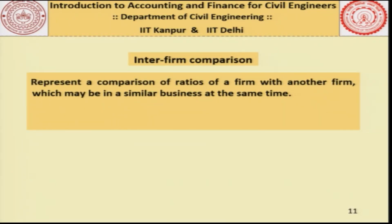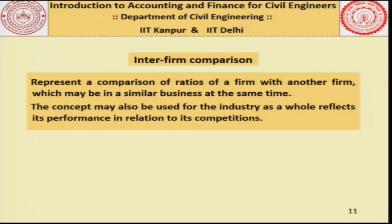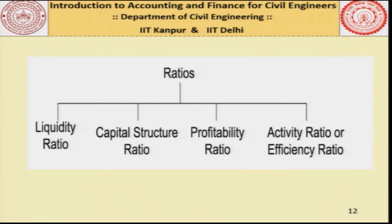Inter-firm comparison represents a comparison of ratios of a firm with another firm which may be in a similar business at the same time. You can compare two construction companies, automobile manufacturers, electronics manufacturers and so on. The concept may also be used for the industry as a whole and it reflects the performance in relation to its competitors. When it comes to ratios, there are different types defined: liquidity, capital structure, profitability, and activity or efficiency ratios — all of which have their own relevance in accounting and finance for construction management.